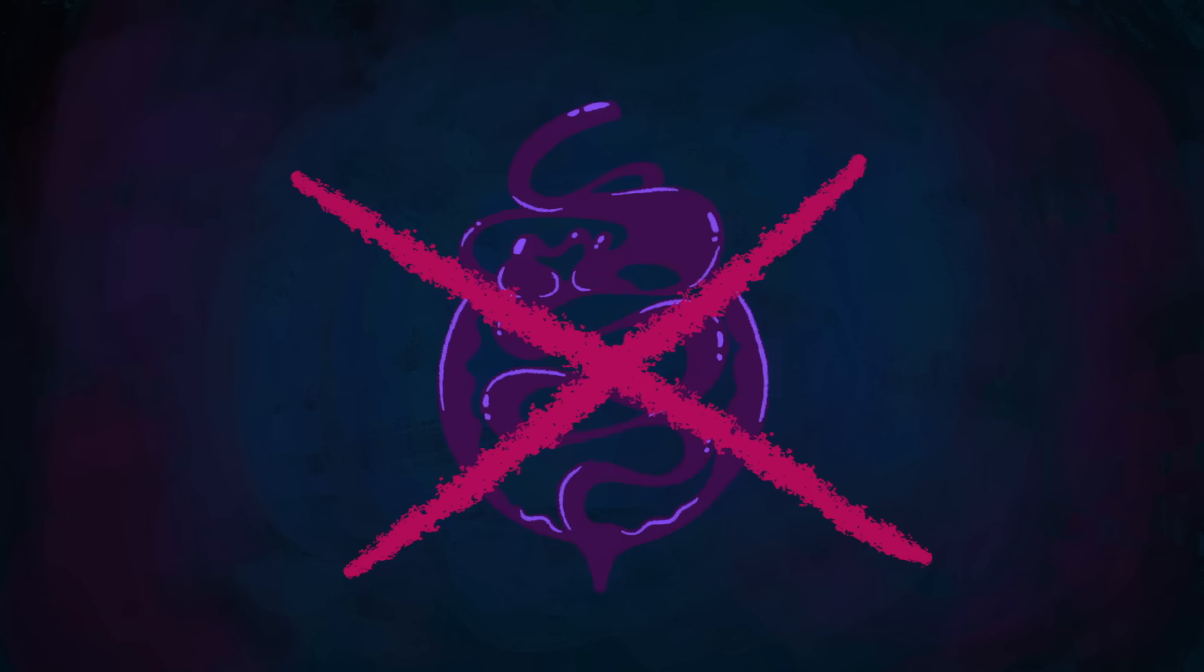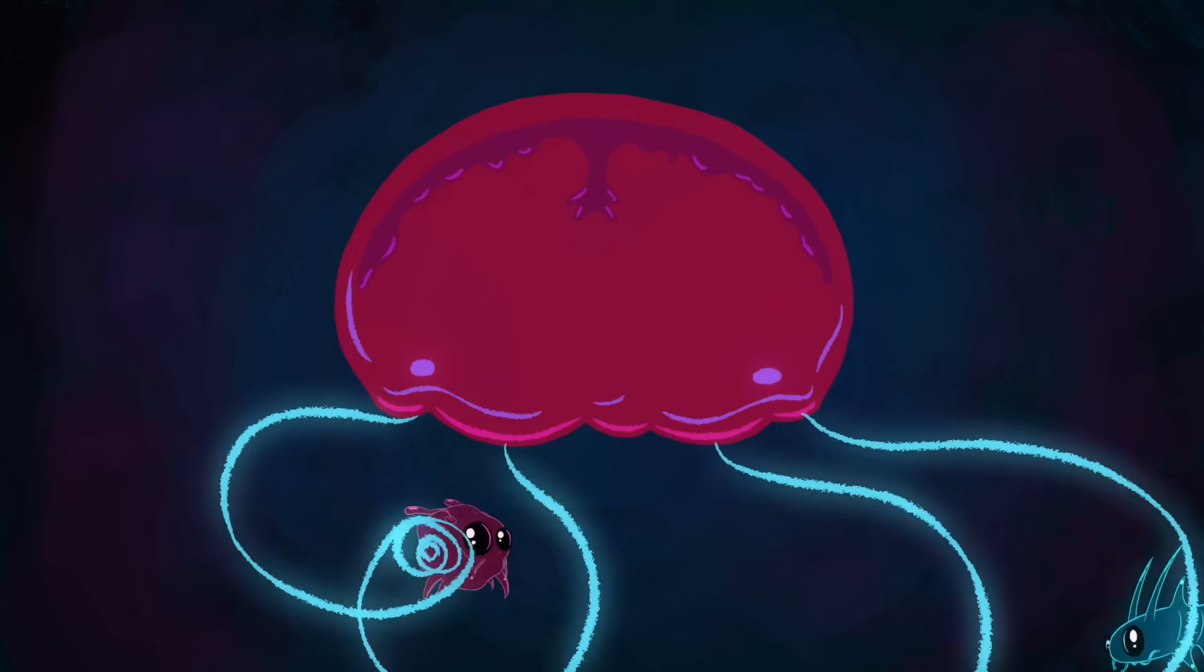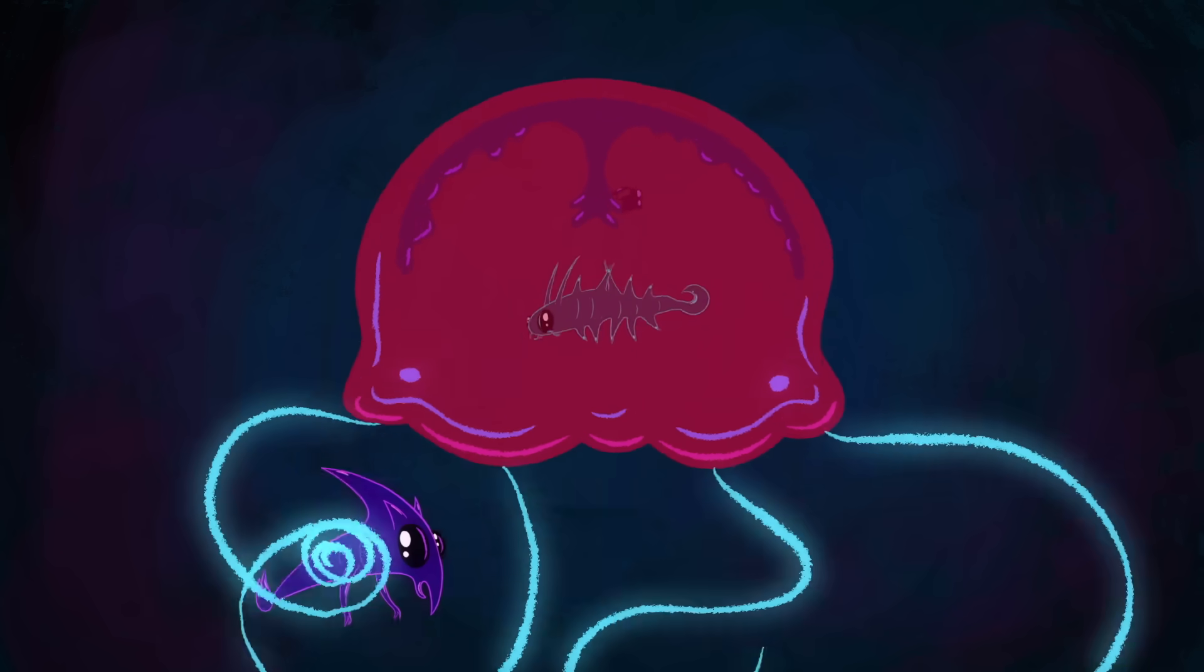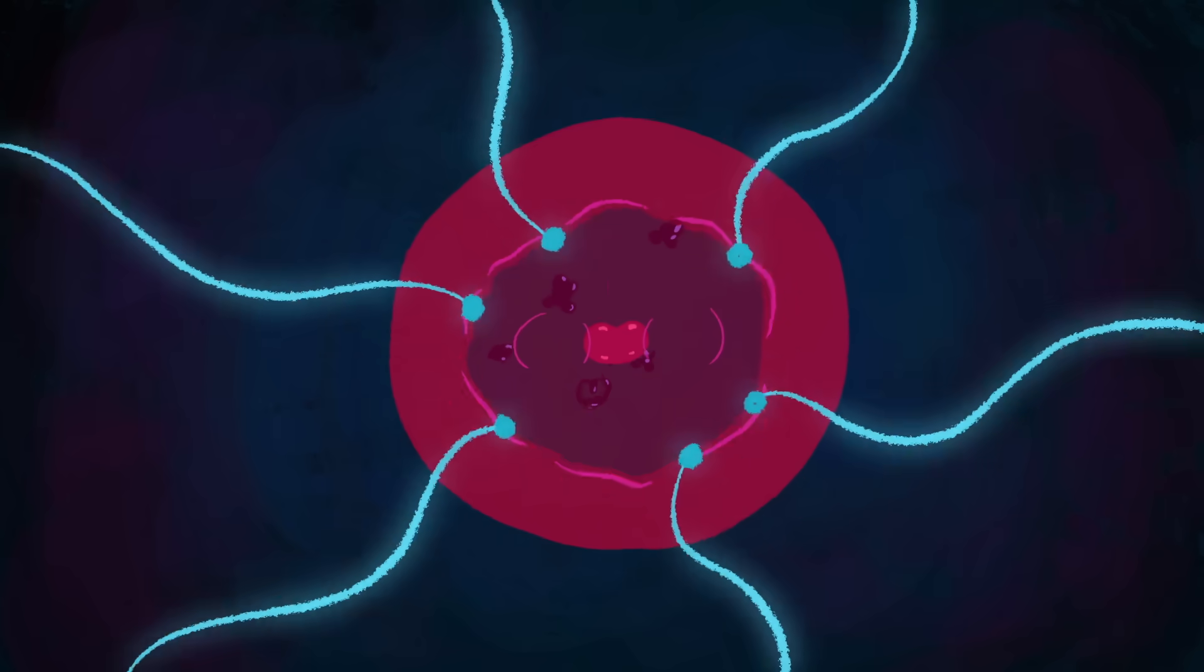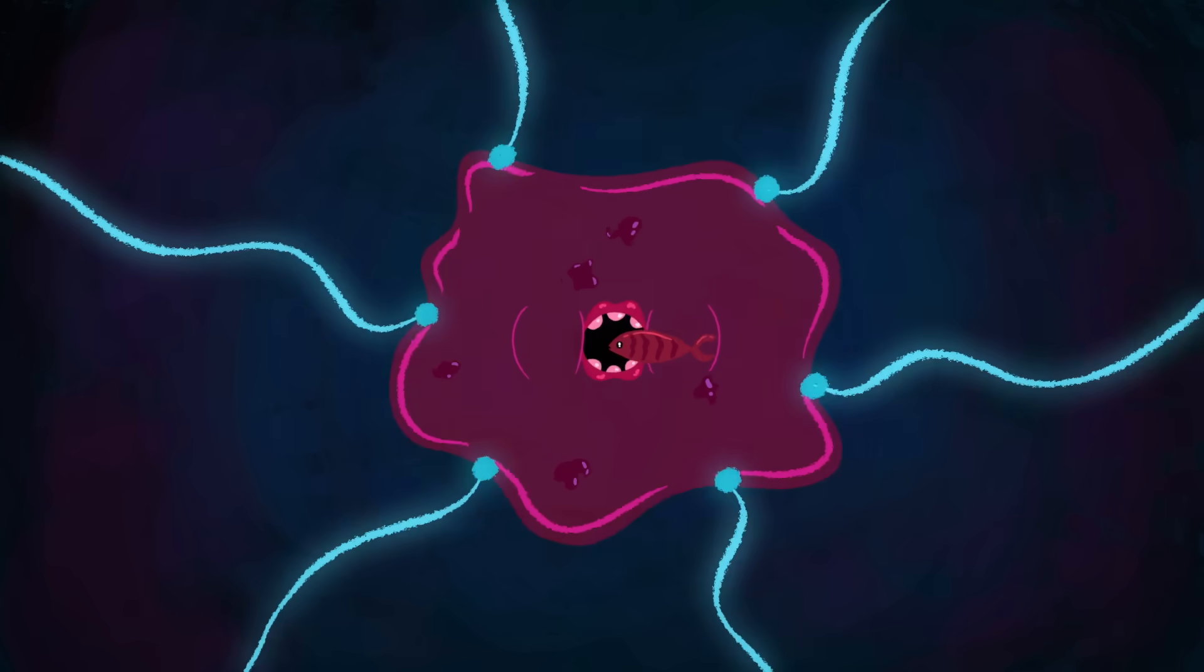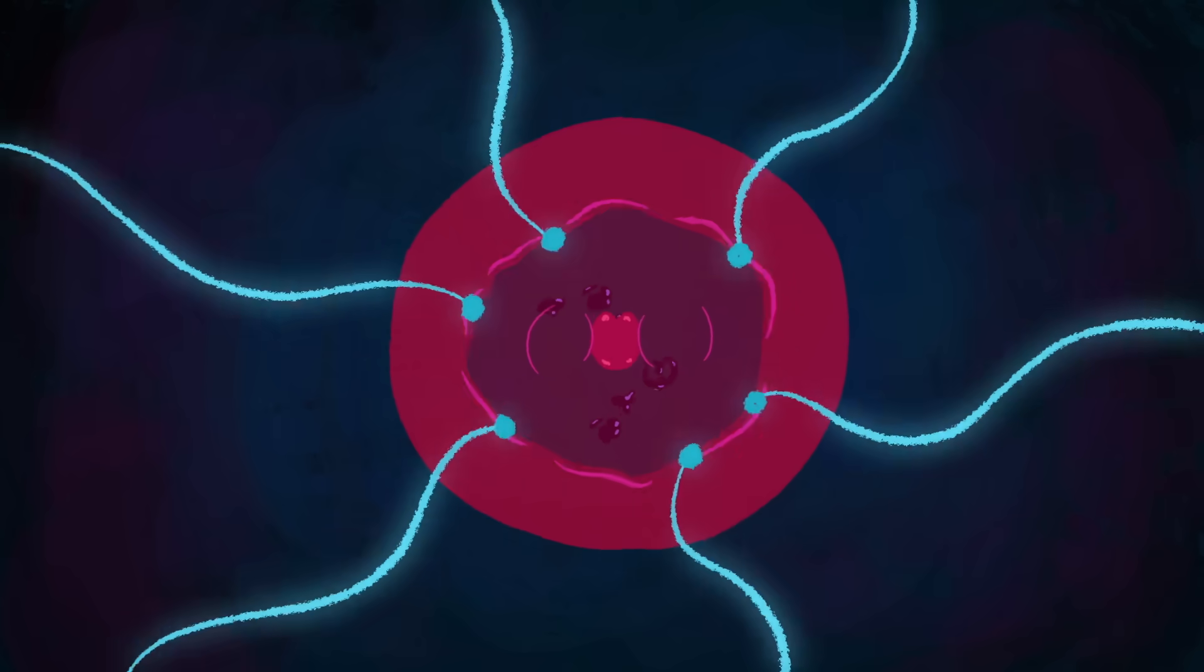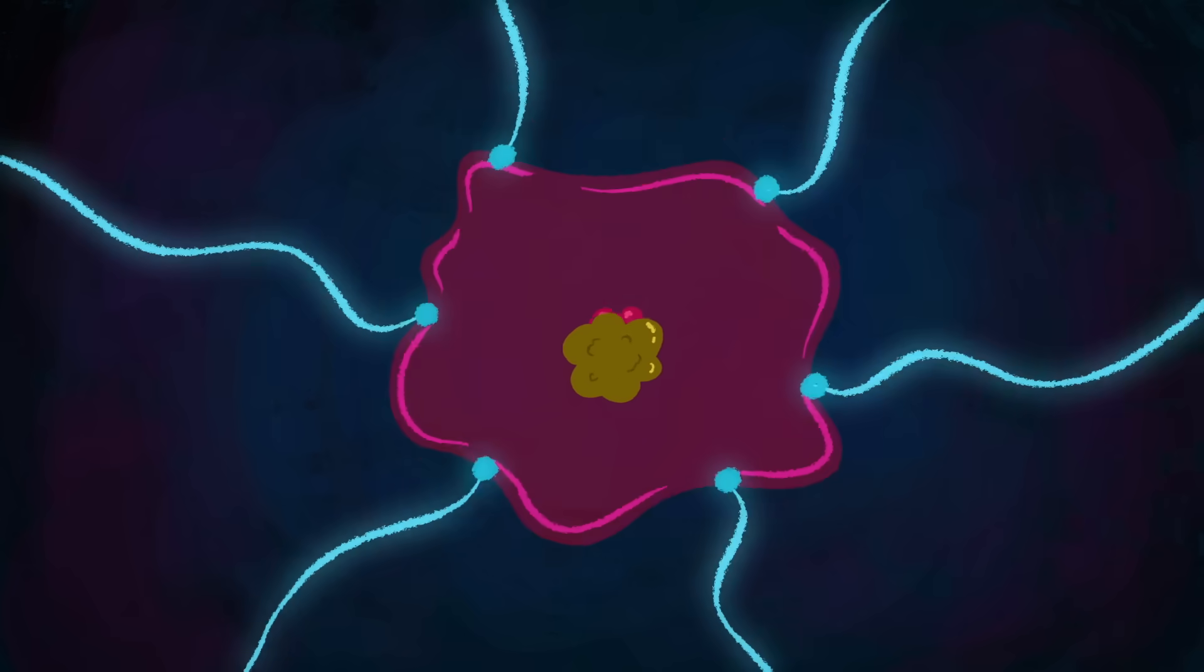Jellyfish don't have typical digestive systems either. These gelatinous carnivores consume plankton and other small sea creatures through a hole in the underside of their bells. The nutrients are absorbed by an inner layer of cells, with waste excreted back through their mouths.